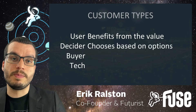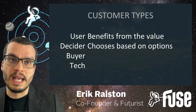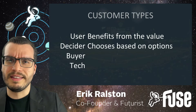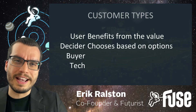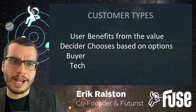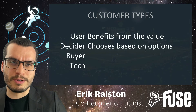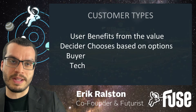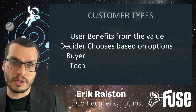The next type is the decider — the person who chooses based on a set of options. This is the only person who can give it an actual green light: 'I want that one.' The user probably gives feedback, but the buyer and the tech are people who could actually red-light the purchase — slow it down or completely put the kibosh on it because there's some sort of misfit to the user or the organization.